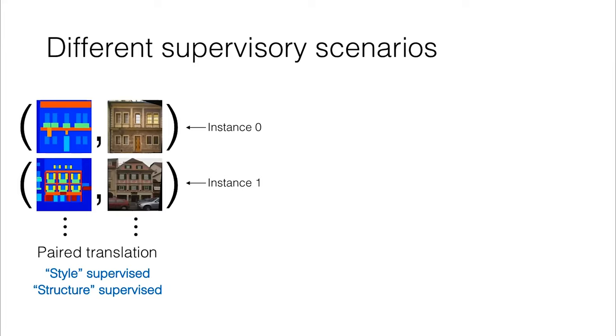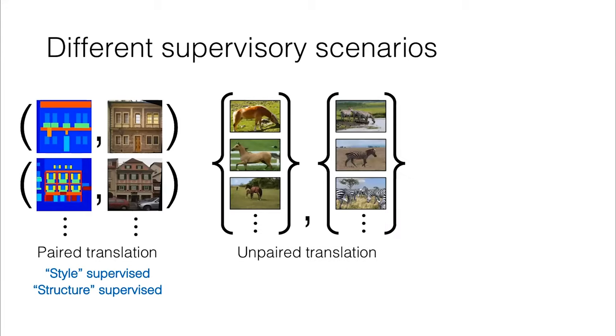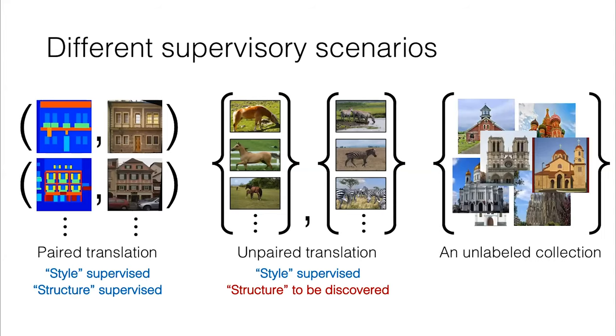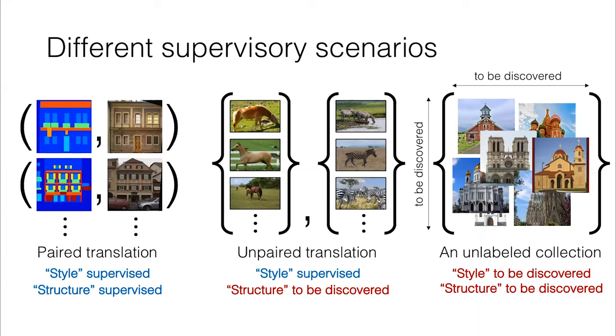But you may not always be so fortunate. Many times you may be working in an unpaired translation scenario where you only have set level supervision. Here you do have domain A and domain B, so again you have style somewhat taken care of. But what you don't have is structure or correspondence, so your learning system ends up having to discover this. We can move even further - we can think about having an unlabeled collection of images. Here you're not really given anything. It's all up to you to discover both the style and the structure.